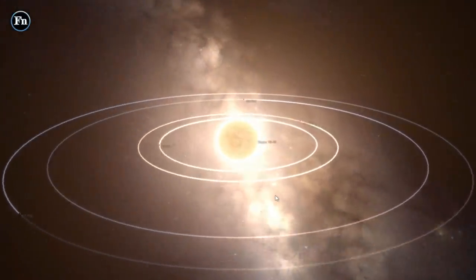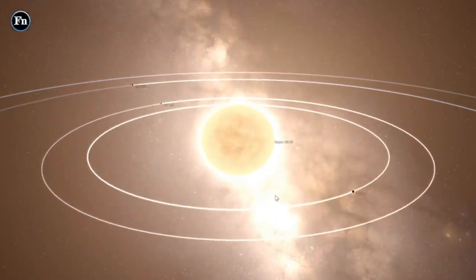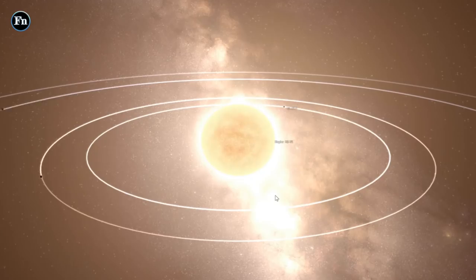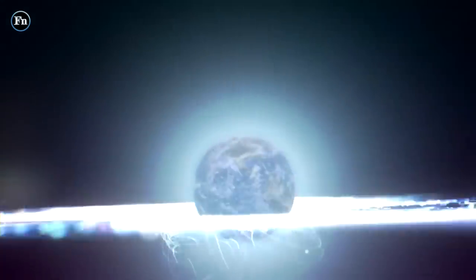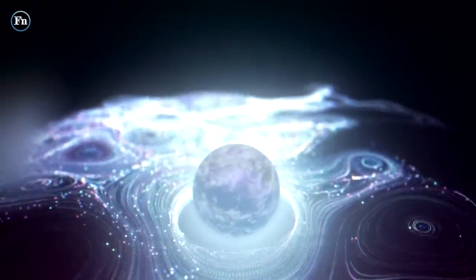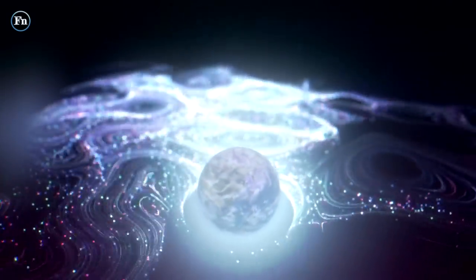Astronomers relate the planet to the Goldilocks Zone, meaning that the planet's distance from its star is just perfect, making it not too hot and not too cold for life to exist.